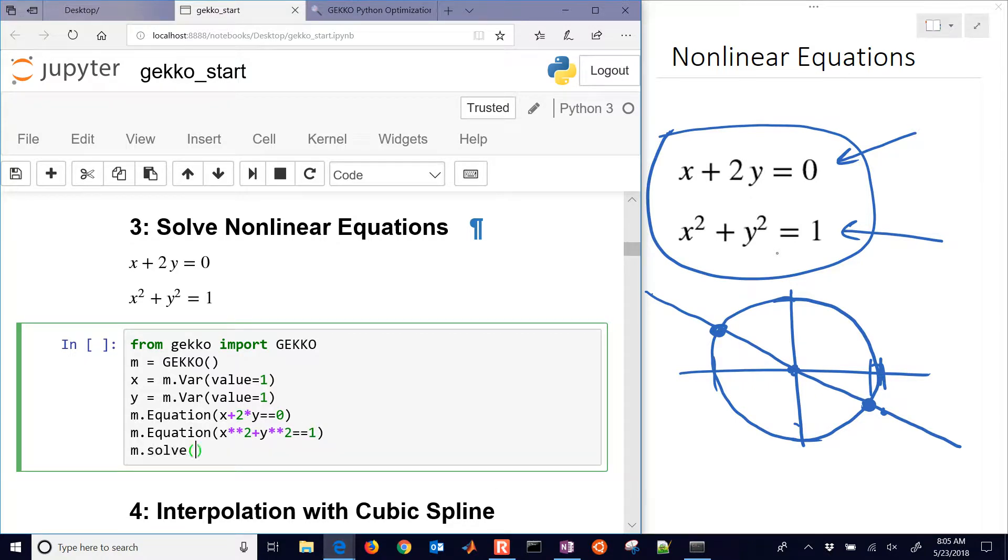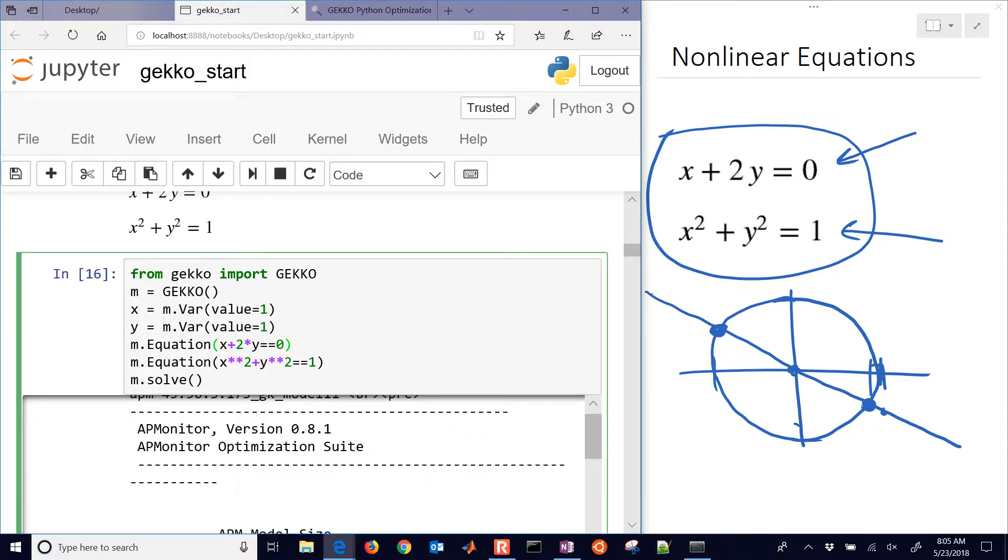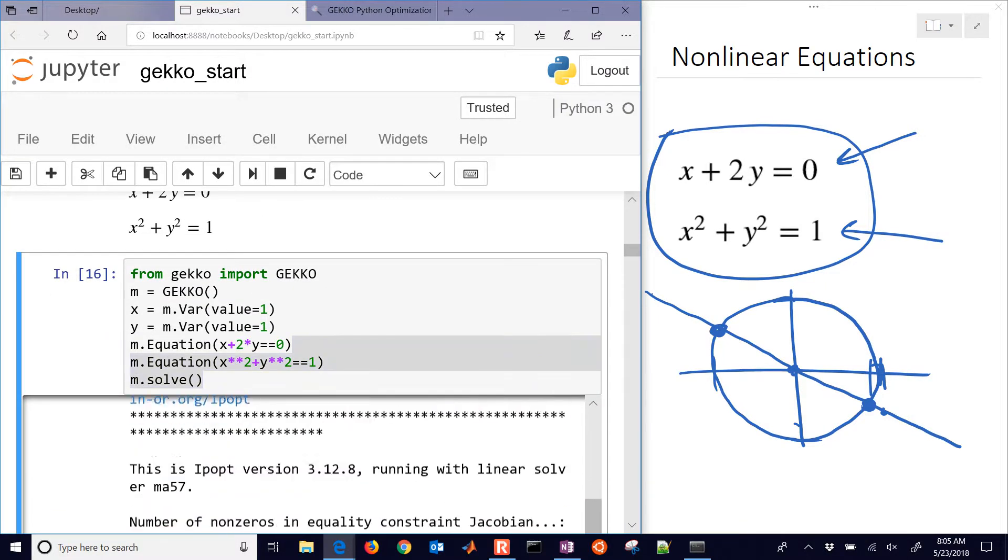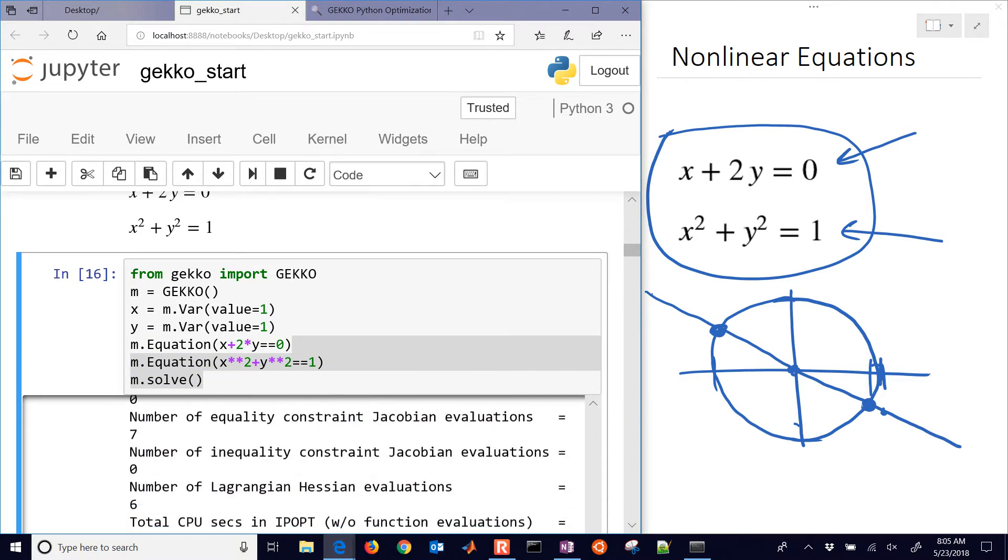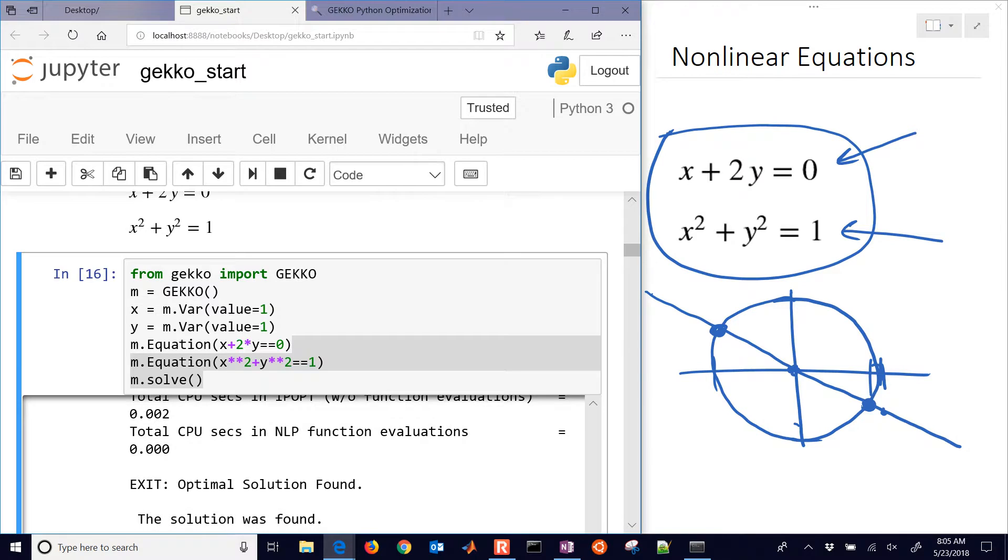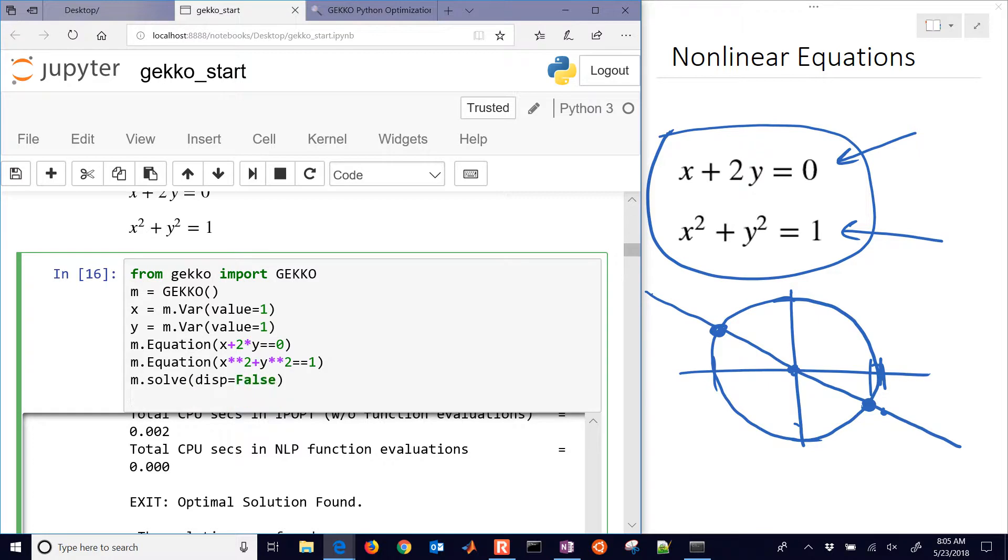Now I can solve it, and let's just see if it returned a good solution. There I can see it's solving. It worked on it. You see a lot of solver output there, and in the end it says it found a solution. I just want to see the solution. I don't necessarily want to see the solver, so I'll say display equals false.